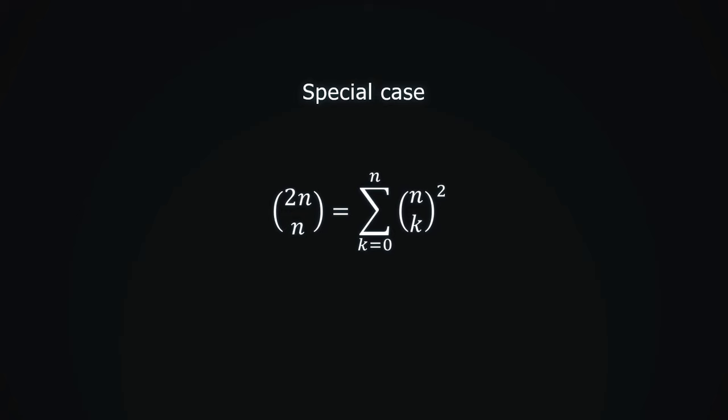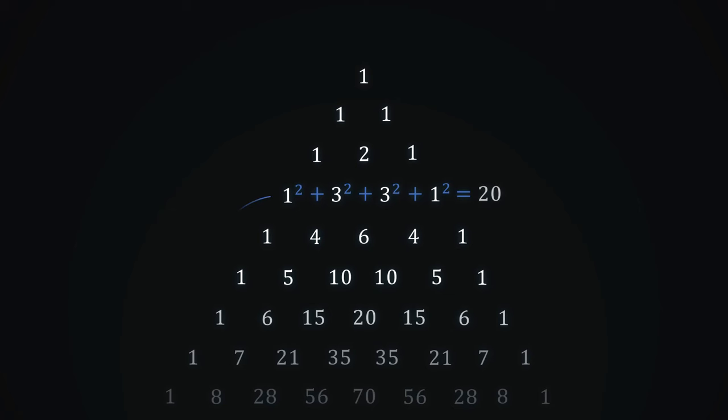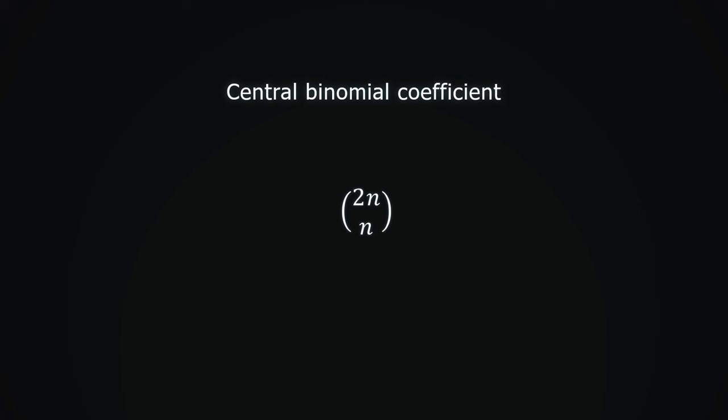In other words, if we square the binomial coefficients in one row, then add them up, we get the central term in the row with twice the index. By the way, this term 2n choose n is called a central binomial coefficient.